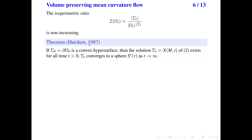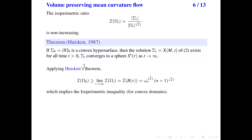The volume-preserving flow was introduced by Huisken in 1987. He showed that if the initial hypersurface is convex, then the solution sigma_t of the volume-preserving flow exists for all time and converges to a sphere as time goes to infinity. So we have both the monotonicity of the isoperimetric ratio and the convergence result of the flow. We can then apply Huisken's theory to compare the initial value of the isoperimetric ratio at the initial domain omega zero with its limiting value, which is a constant. This is equivalent to the isoperimetric inequality for convex domains.